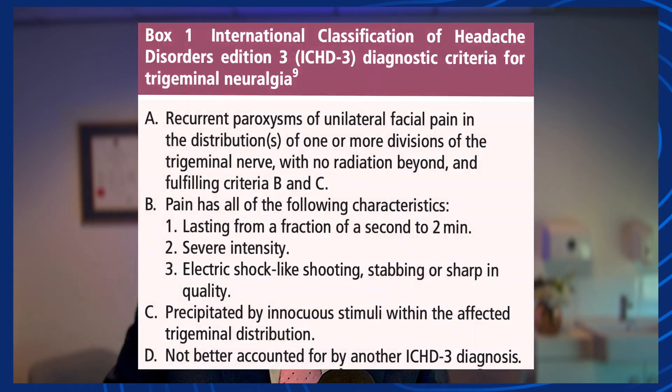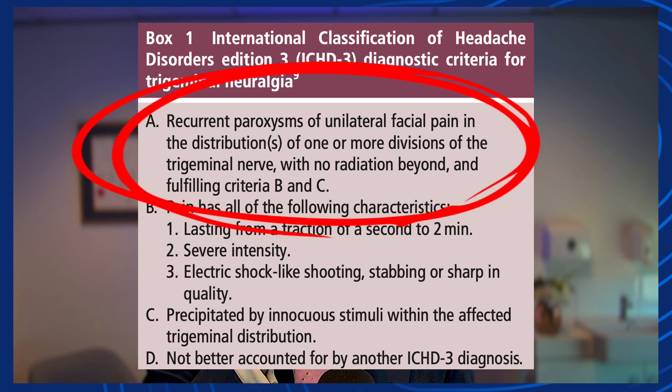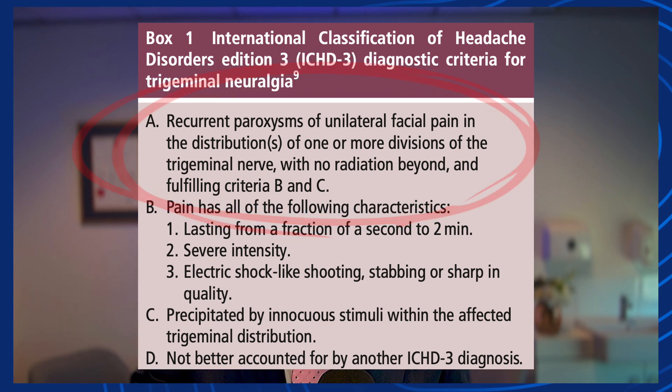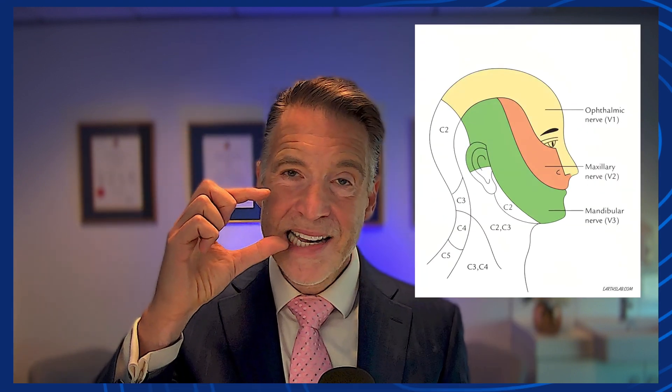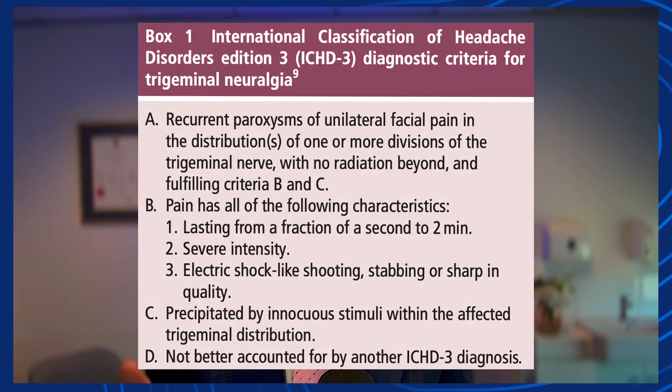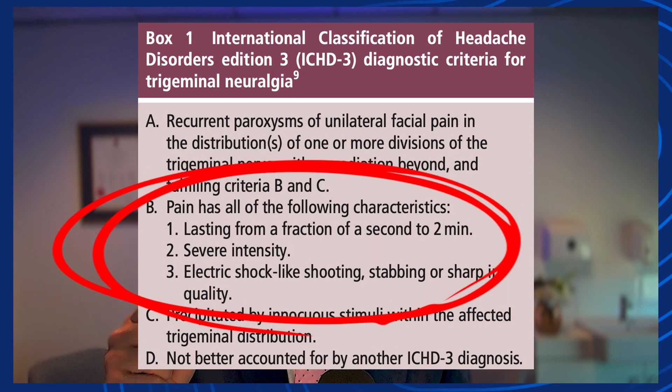I'm going to share what I think is one of the most debilitating pain conditions — it's called a suicide disease: trigeminal neuralgia. According to the International Classification of Headache Disorders Edition 3, it is recurrent paroxysms of unilateral facial pain in one or more divisions of the trigeminal nerve — V1 above the eye, V2 between the eye and edge of the mouth, and V3 below the mouth. The pain should last a fraction of a second up to about two minutes, be incredibly severe, and feel like an electric shock.